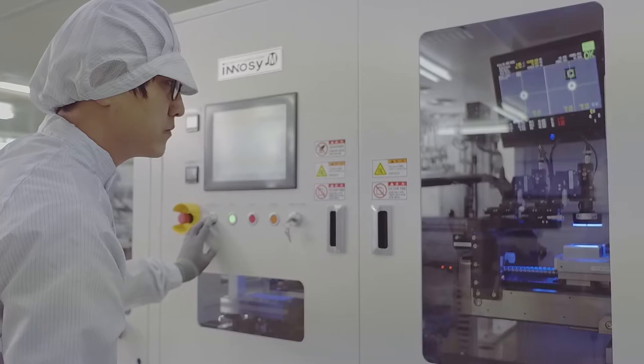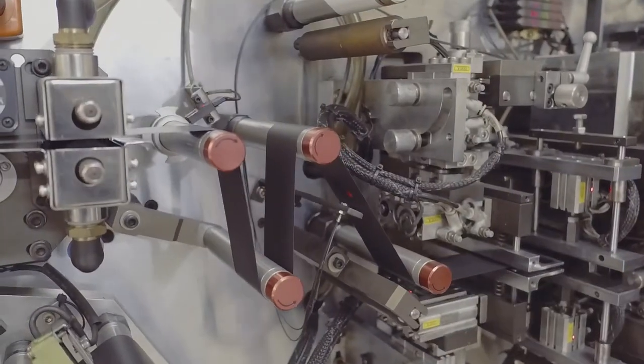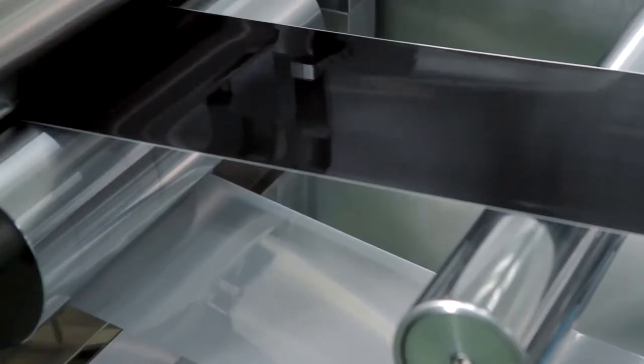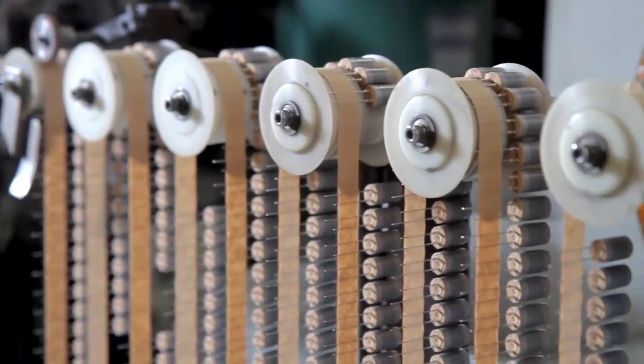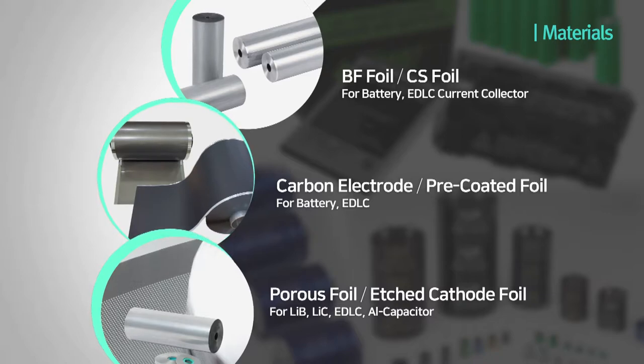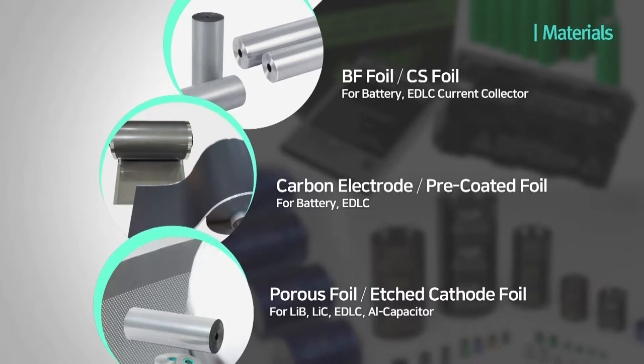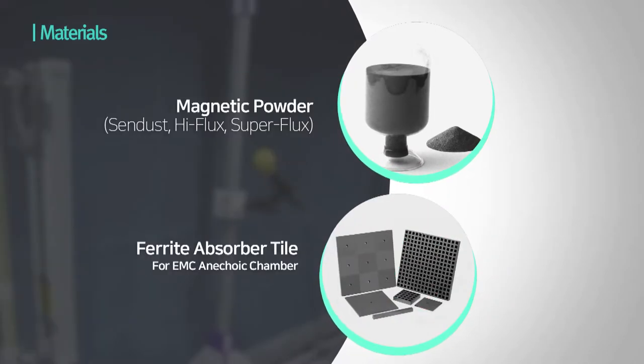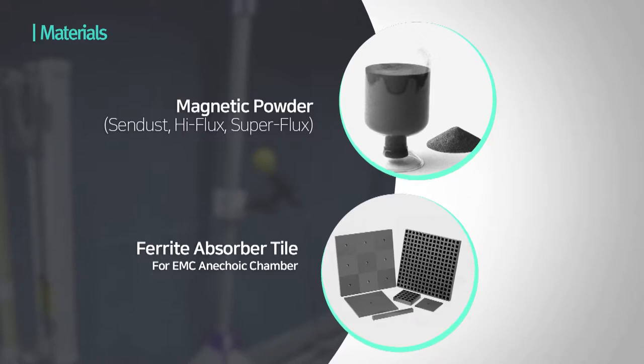Samhua Capacitor Group strives toward producing materials and raw materials for the development of high-quality parts. We produce aluminum foils used as the core material for batteries, EDLC, and electrolytic capacitors, as well as the main material of metal magnetic powder for the metal powder cores and ferrite absorber tiles used for radio shielding rooms.